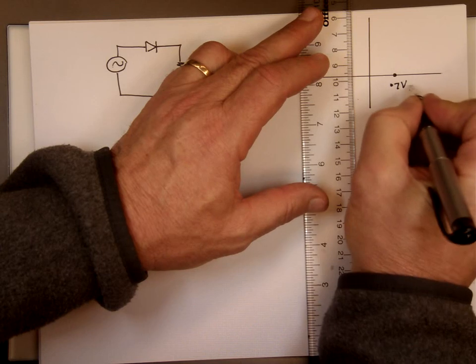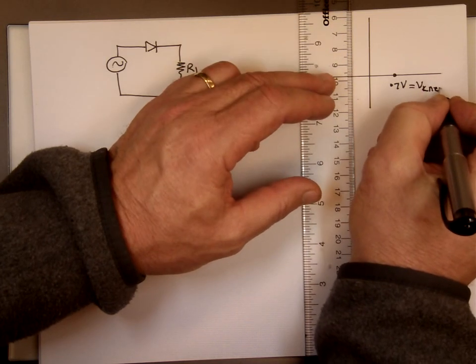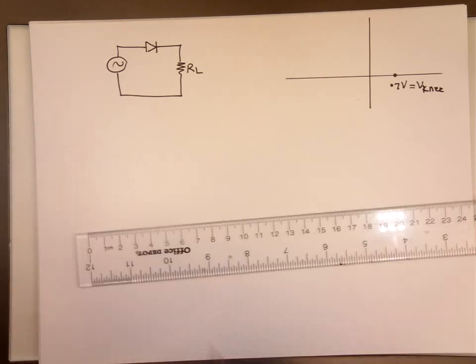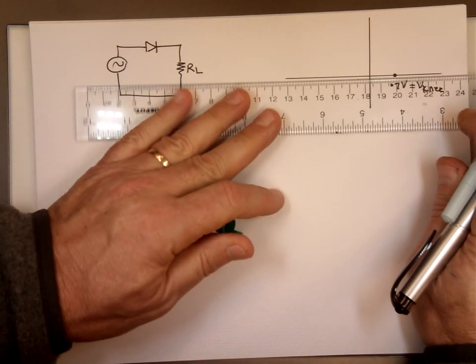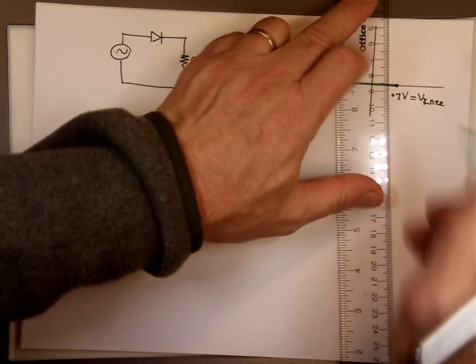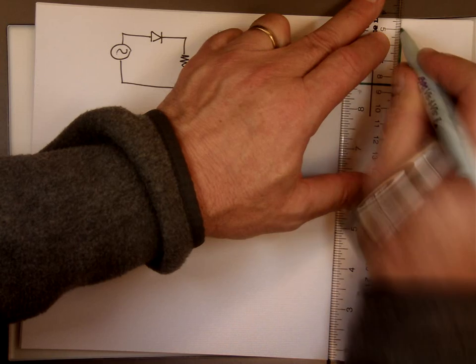That's the V-knee. That's the voltage required to actually allow the current to go through it. So if we do that, this is what my current will look like, straight up there.